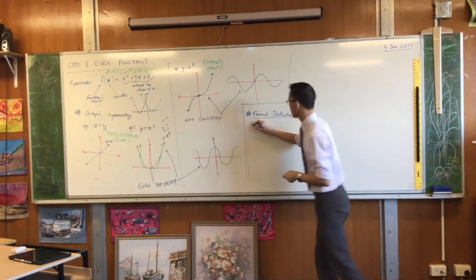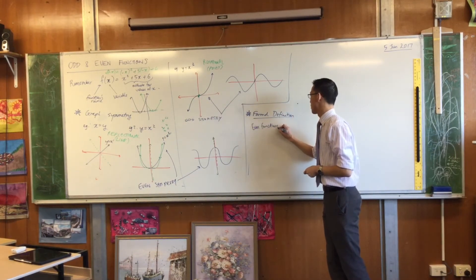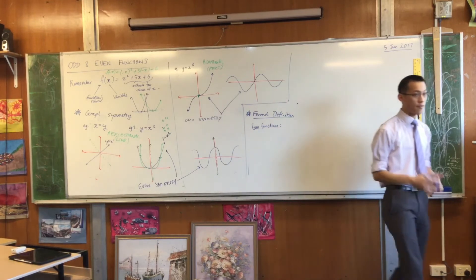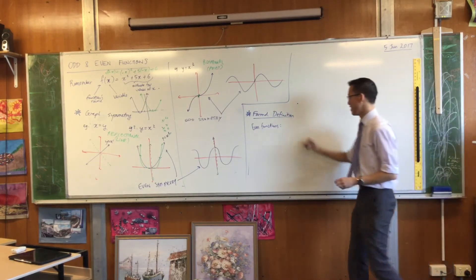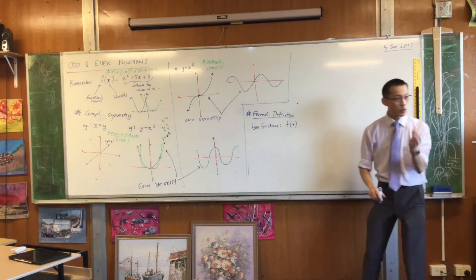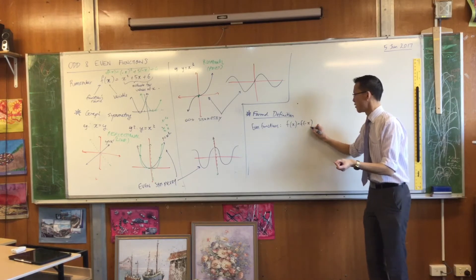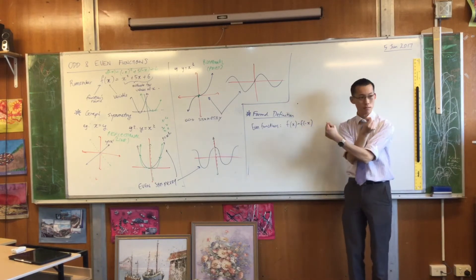We'll talk about even symmetry first. For even functions, what makes an even function an even function is that the function is equal to itself if you are to horizontally reflect it.